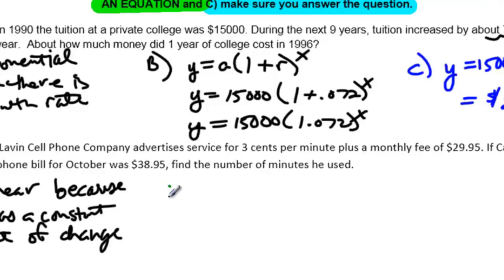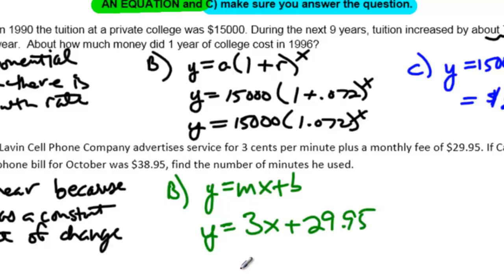Part B has me write an equation. I'm going to be using a linear equation, so I'm going to be using Y equals MX plus B. In this case, my common difference is my slope or my rate of change, so it's 3. And my 29.95 is my starting point. So X in this problem is going to equal the number of minutes. And I should have said up here what X is in the first equation. X equals number of years from 1990.